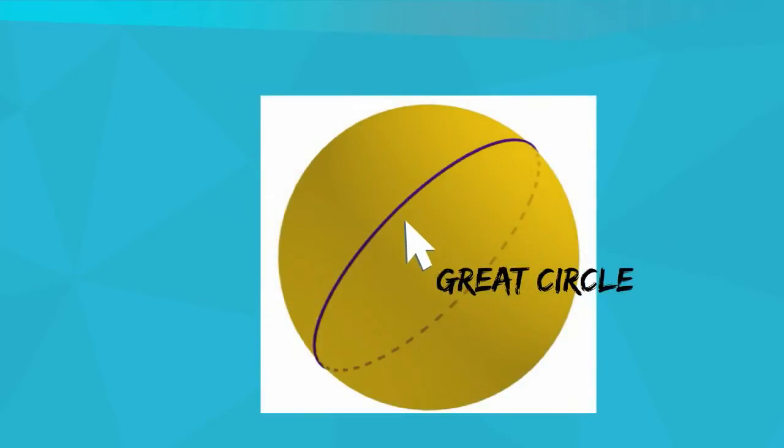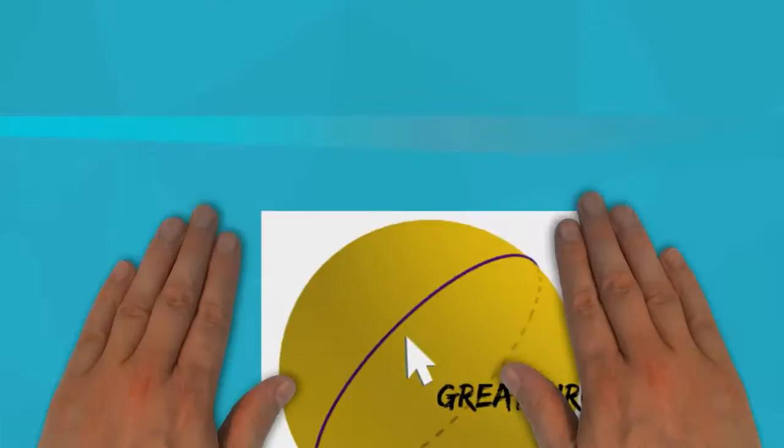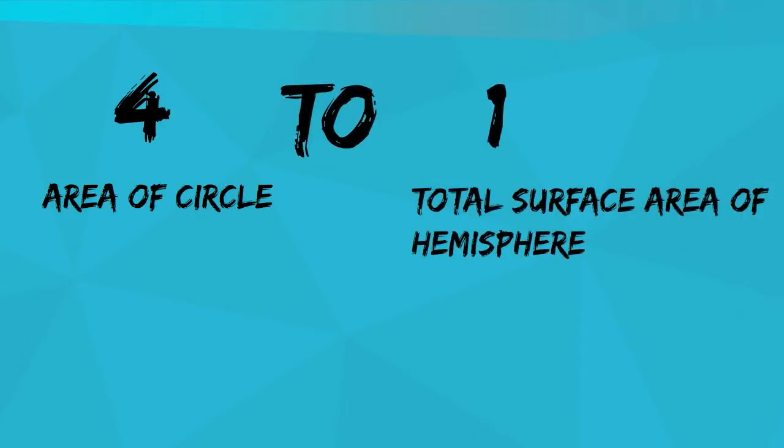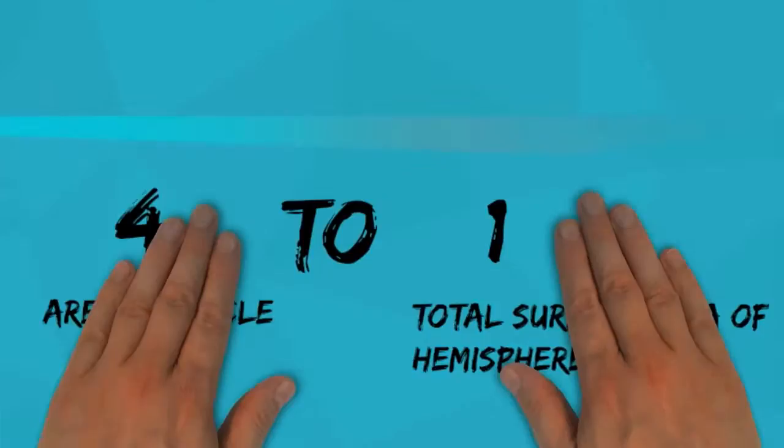If you cut a sphere exactly in half, the flat surface creates the great circle of the sphere. The ratio of the area of the great circle to the total surface area of the sphere is 4 to 1. With a hemisphere it is 3 to 1.